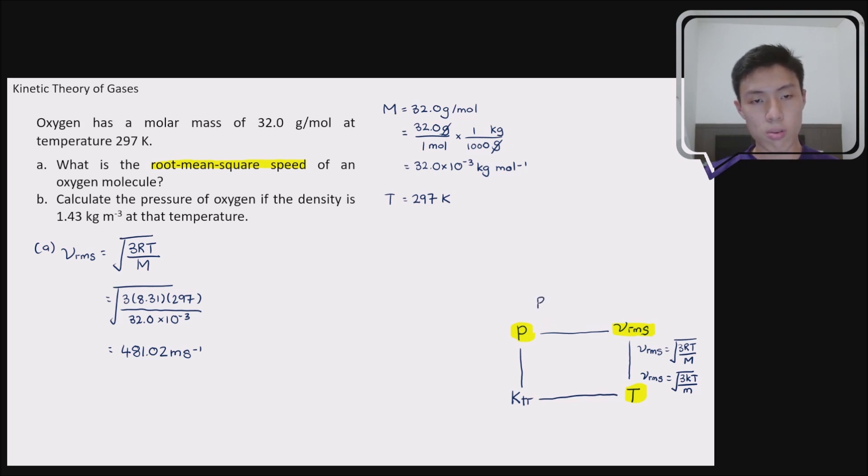So again, there's two equations available to be picked. One is PV is equals to 1 over 3 and M Vrms square. Another one will be P is equals to 1 over 3 rho Vrms square. For this situation, I believe the clear pick will be the second equation because you are given the density of the gas system over here. So the density of the oxygen gas in this situation is 1.43 kg per meter cube. So we'll be using the second equation.